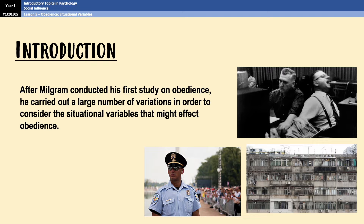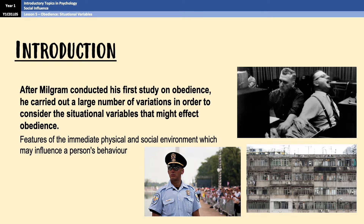The three features that Milgram specifically focused on, and that we are going to look at in this video, are location, proximity, and uniform. For each of these, Milgram conducted a variation of his study, and each of those variations has its own findings and its own explanations for those findings, all of which we're going to go through in this video.